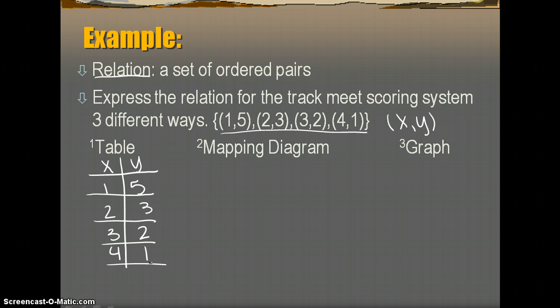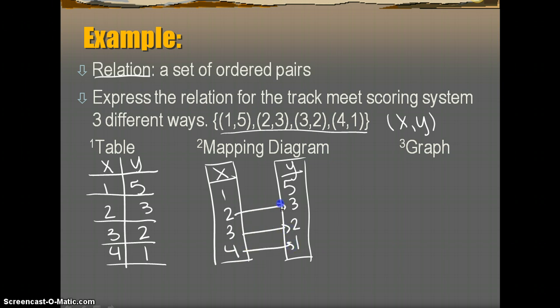The second type of way in order to express the relation is a mapping diagram. So a mapping diagram is super similar to a table. It's just separated, and then arrows are used to represent the two pieces of information. So again, we have our X's and our Y's. So we have 1, 2, 3, and 4. And then 5, 3, 2, and 1. And then you just use arrows to show what the relation is. So 1 relates to 5, 2 to 3, 3 to 2, and 4 to 1.